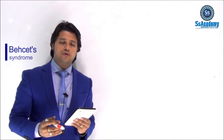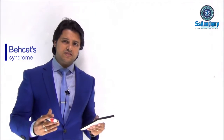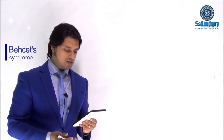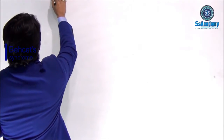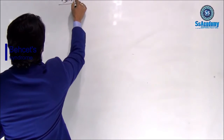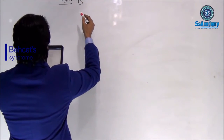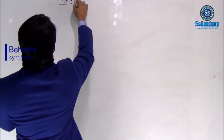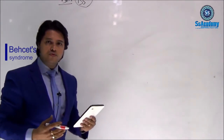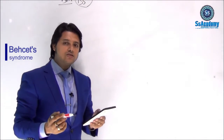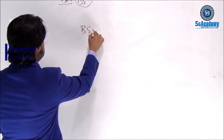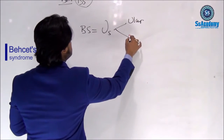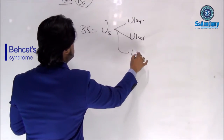Behçet's syndrome is one of the most important hot topics, and remembering all of these features is really a bit tough. So how can you remember? We will write a box — the BS box for Behçet's syndrome. Before going into the full disease features, you must remember that Behçet's syndrome is essentially the three U's. U means ulcer, U means ulcer, and U means uveitis.